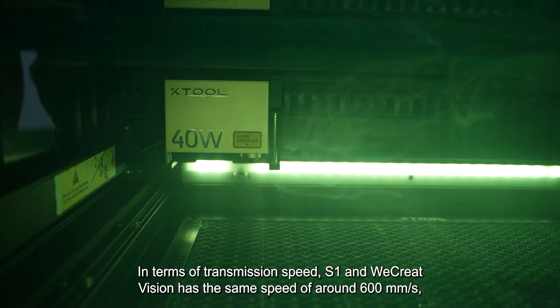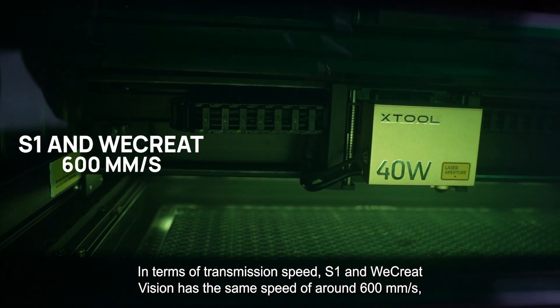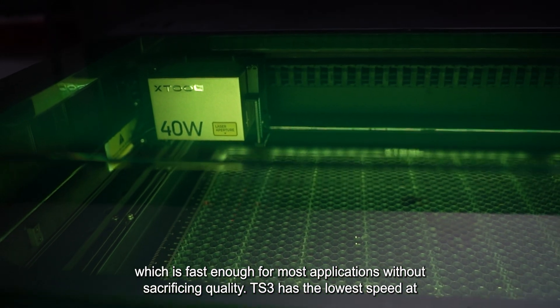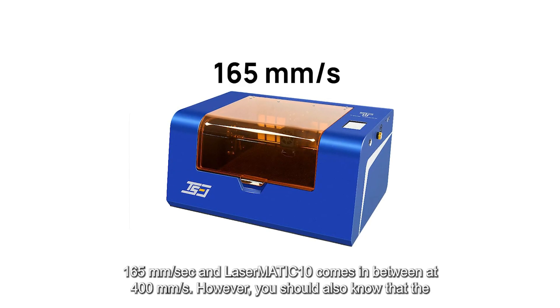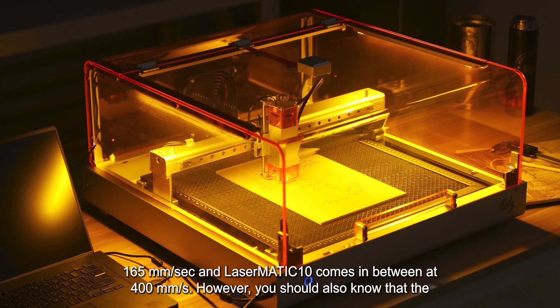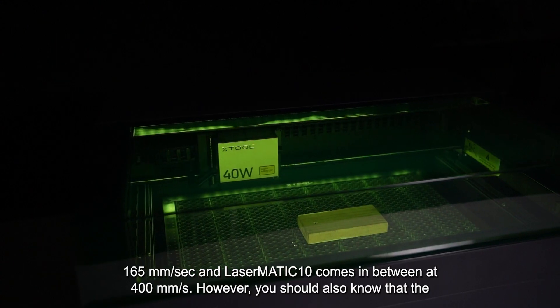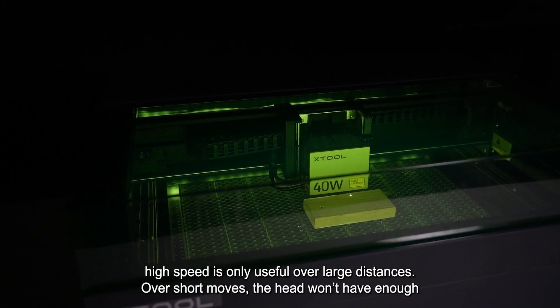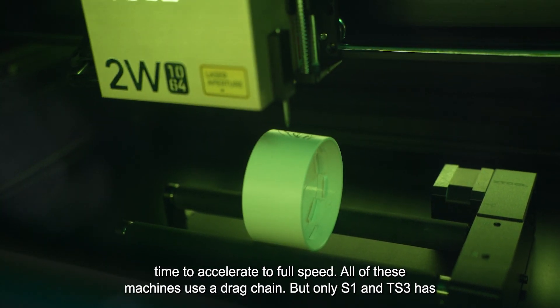In terms of transmission speed, S1 and Vcreate Vision has the same speed of around 600 mm per second, which is fast enough for most applications without sacrificing quality. TS3 has the lowest speed at 165 mm per second and Lasermatic 10 comes in between at 400 mm per second. However, you should also know that the high speed is only useful over large distances. Over short moves, the head won't have enough time to accelerate to full speed.